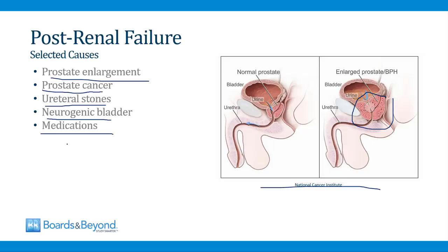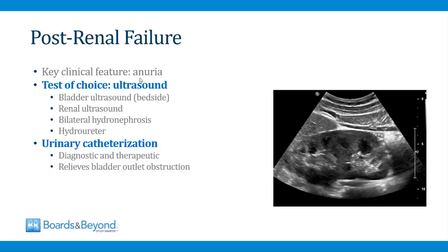A number of medications blunt the ability for patients to void. When patients are on these drugs, the bladder fills up and urine backs up into the kidneys, causing post-renal failure. Anticholinergic drugs like atropine are the classic group to do this, but this also occurs in patients on sedatives or those who have received anesthesia. One key clinical feature of post-renal failure is anuria. The test of choice for diagnosis of post-renal failure is an ultrasound — either a bladder ultrasound, which is often available at the bedside, or a renal ultrasound.